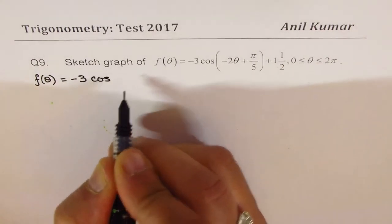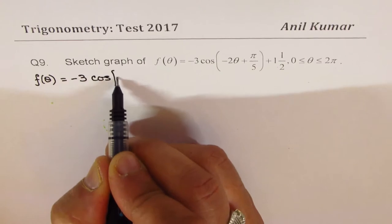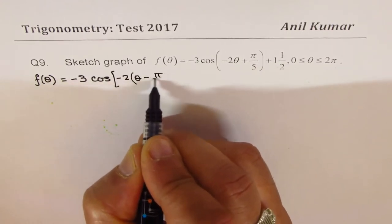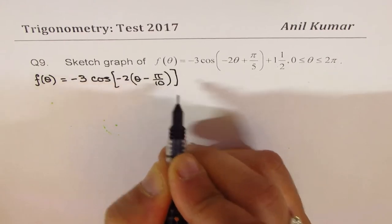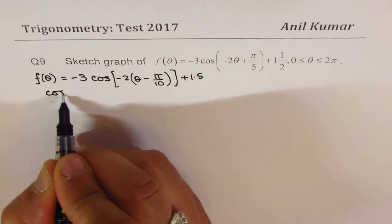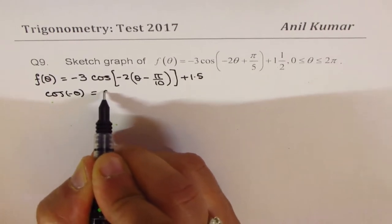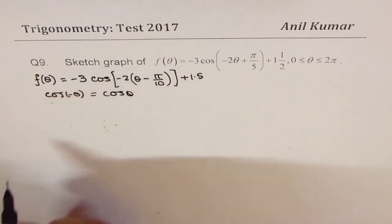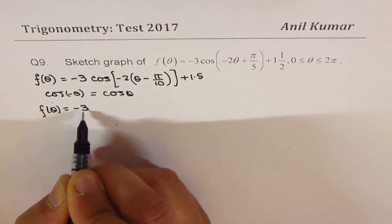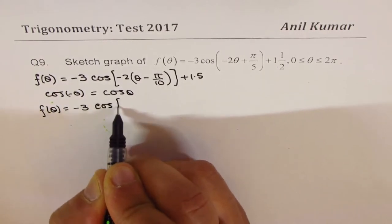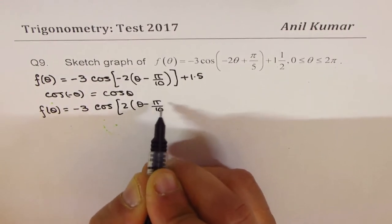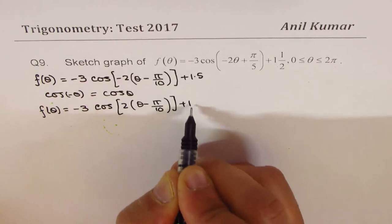We'll factor out -2 and then we get (θ - π/10) + 1.5. Since we know that cos(-θ) = cos(θ), I can now write this function as -3cos(2(θ - π/10)) + 1.5.